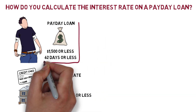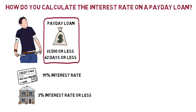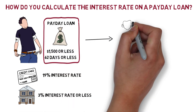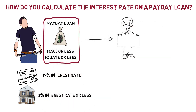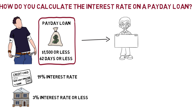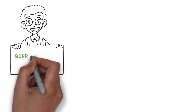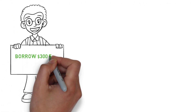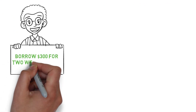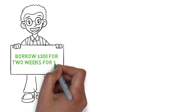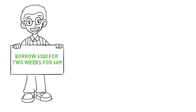But payday loans are advertised a little differently. Instead of telling you the rate first, they tell you the dollar amount of borrowing. For example, it's common to see ads that will say: borrow $300 for 2 weeks for $69.